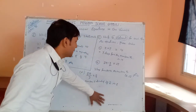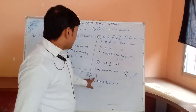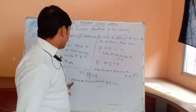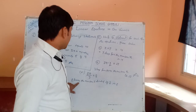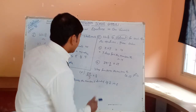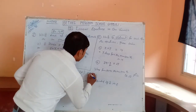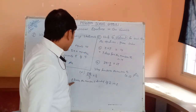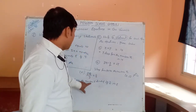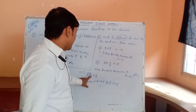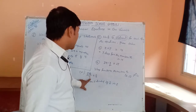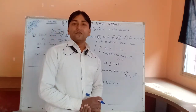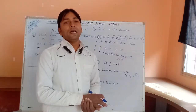2 times the number z — z is an unknown number, a variable — divided by 3, is 8. This way you can write the remaining questions as well.